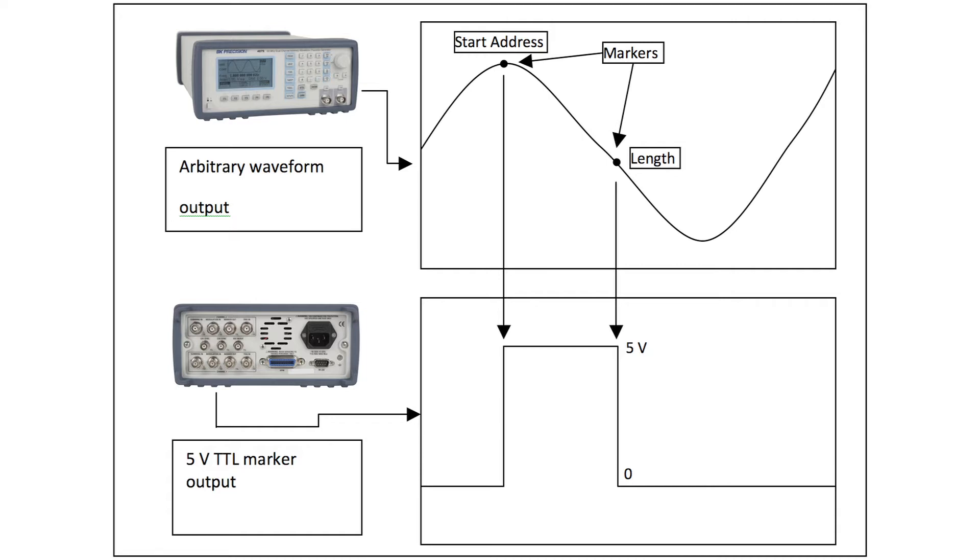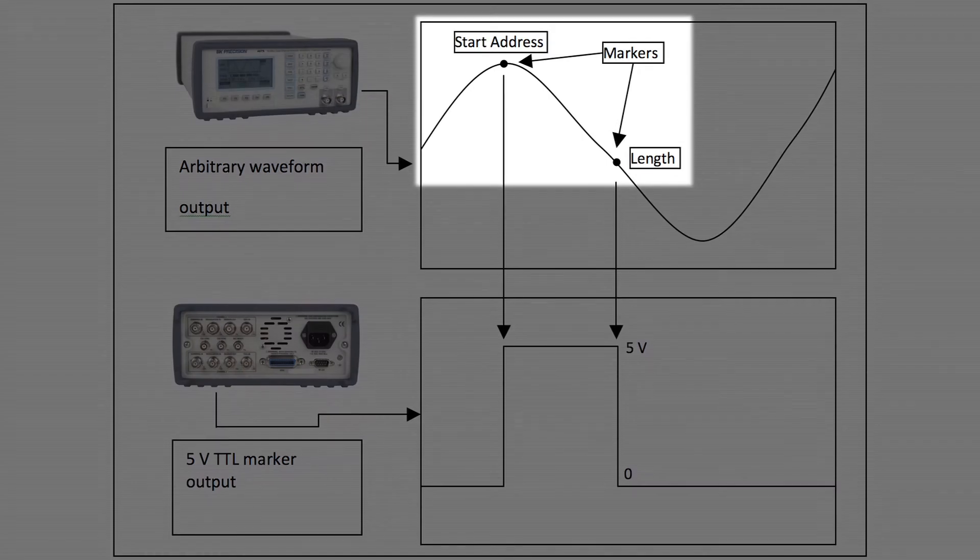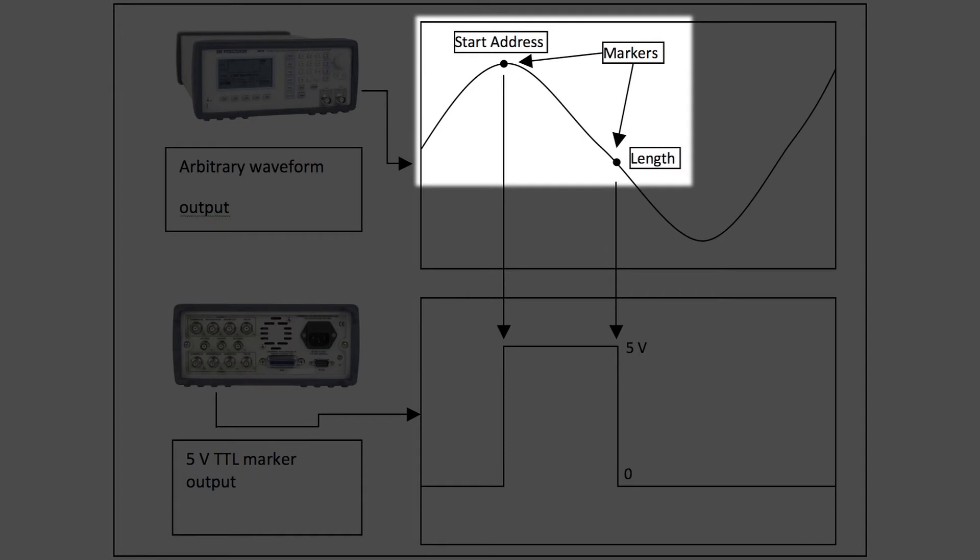BNK's arbitrary waveform generators that support this function can currently select and produce this marker output up to 4000 points long.